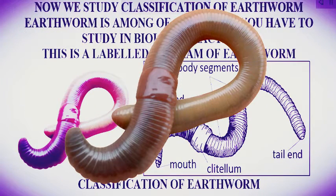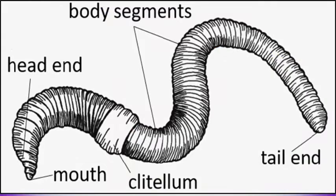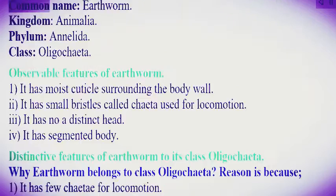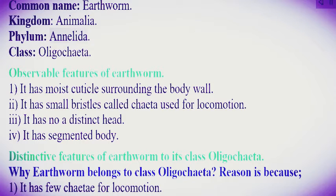Now we study classification of earthworm. Earthworm is among the organisms you have to study in biology practical. This is a labeled diagram of earthworm. Classification of earthworm: common name — earthworm; kingdom — Animalia; phylum — Annelida; class — Oligochaeta.